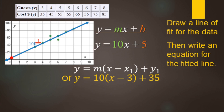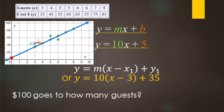If you want slope intercept form instead, just distribute the 10: 10 times x gives 10x, 10 times 3 is 30, and then negative 30 added to 35 gives 5. So the slope intercept form is y = 10x + 5.